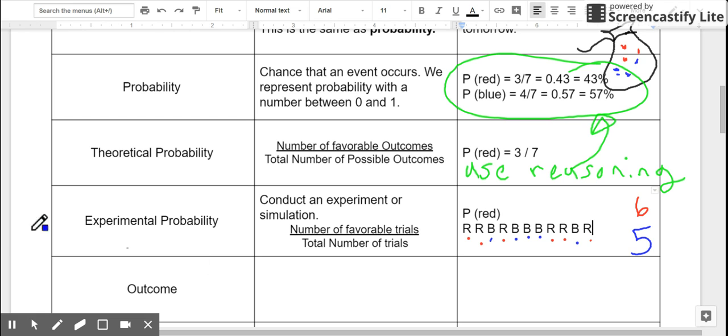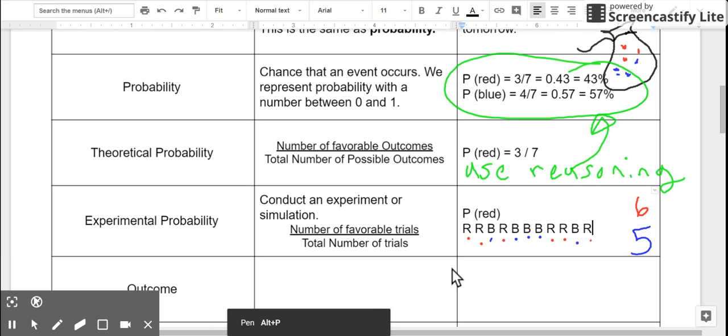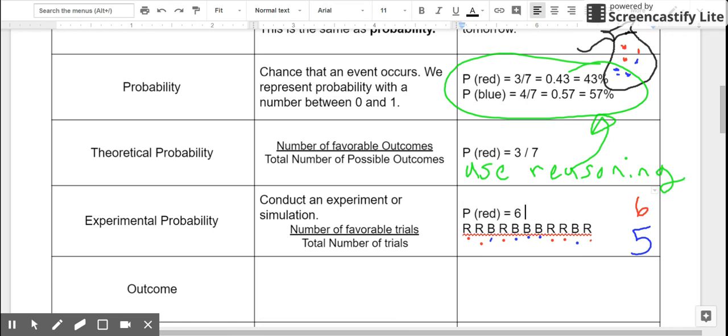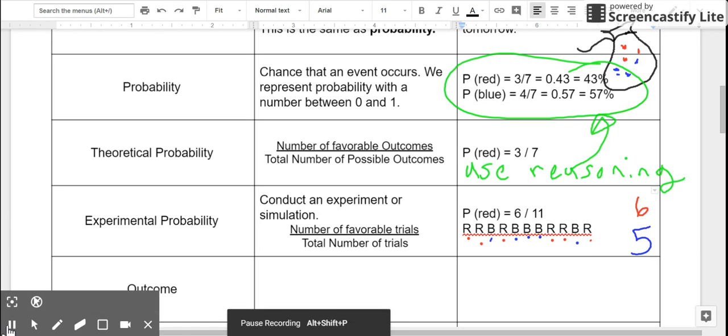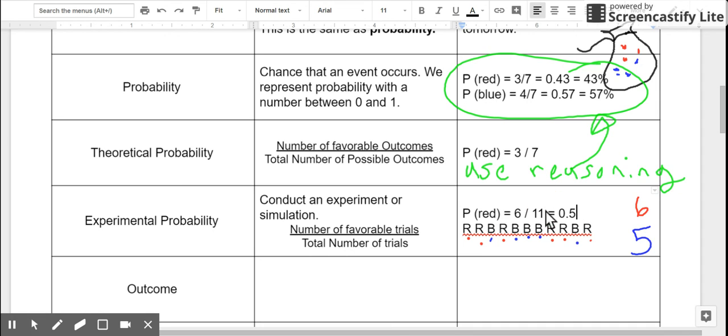Interesting. So for my red theoretical probability, there were 6 reds out of a total of 11 trials, which is about 0.55 or 55%. That does not match my theoretical probability of 43%. And that's because this was based on an experiment. And experiments are often very close to our theoretical probability, but our experimental probability won't necessarily always match the theoretical probability perfectly.